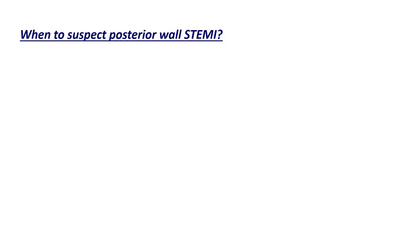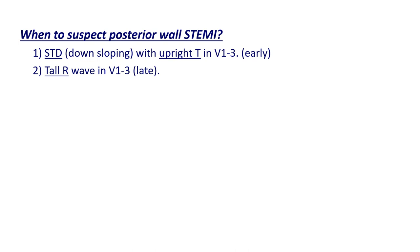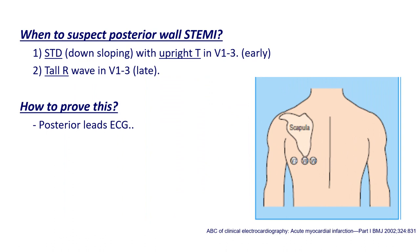When to suspect posterior wall STEMI: look for ST depression, especially downsloping, with upright T wave in V1 to V3 — those are early signs. A taller R wave in V1 to V3 is a late sign, representing the equivalent of a Q wave. To confirm it, do posterior leads: remove V4, V5, V6 from their positions and place them at the back of the patient as V7, V8, and V9. Document this on the ECG paper.